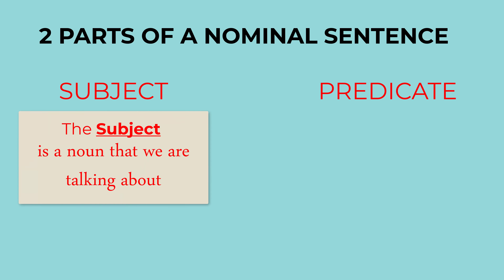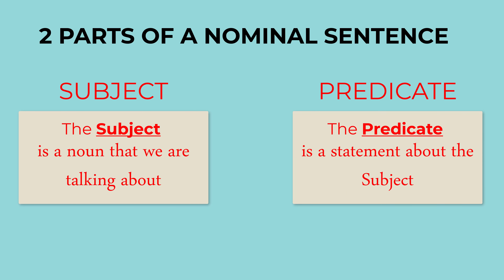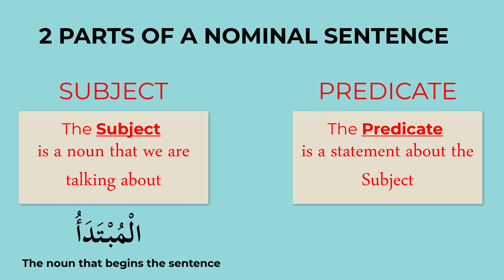The subject is the noun we are talking about, and the predicate is a statement about that noun — it gives a little more detail. The subject in Arabic is called al-mubtada, or simply Mubtada. Those who know Urdu will find this easy, because they use Mubtada. The meaning of Mubtada is 'the thing which one begins with' — something used to begin a sentence.